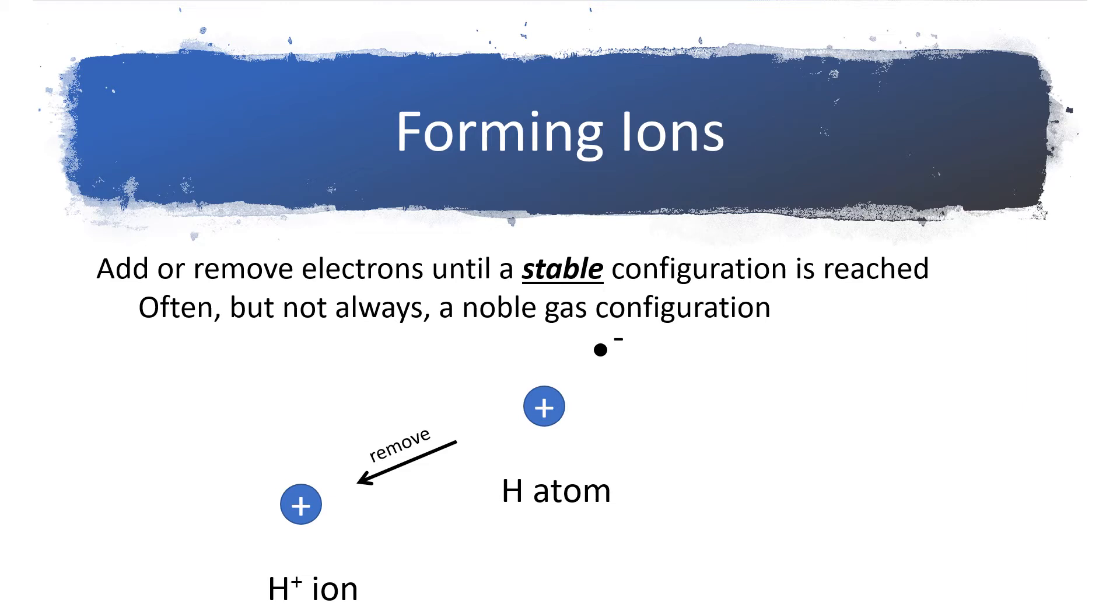We also could add another electron to it, and in that case, hydrogen is going to have two electrons. And when hydrogen has two electrons, it now has the same electron configuration as helium, and so that is how hydrogen reaches that noble gas configuration. In this case, it's not an octet, it's a duet.